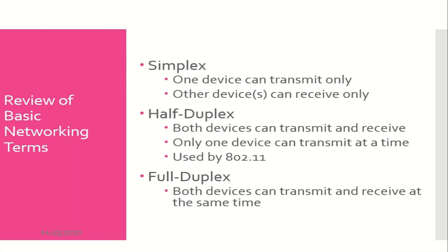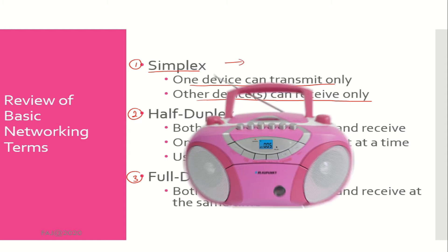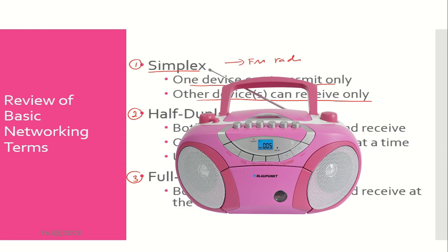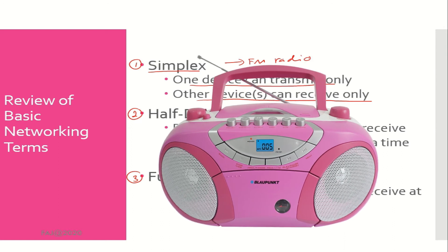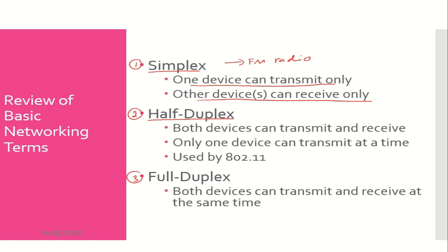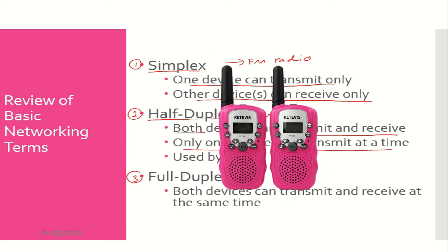Before discussing the various 802.11 topologies, let's review a few basic networking terms that are often misunderstood: simplex, half duplex, and full duplex. These are three dialogue methods used for communication between people and also between computer equipment. Simplex communication: one device is capable of only transmitting and the other only receiving — FM radio is an example. Half duplex communication: both devices are capable of transmitting and receiving, however only one device can transmit at a time — a walkie-talkie is an example.